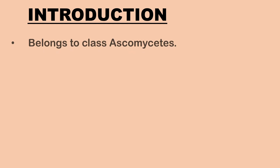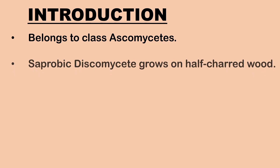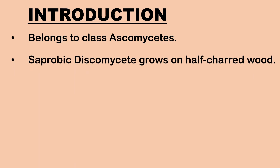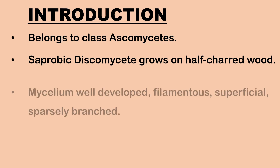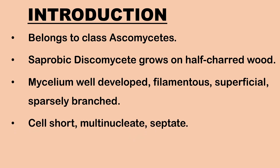Pyronema belongs to class Ascomycetes. It is a saprobic discomycete, usually found growing on decaying leaves or on half-charred wood and burnt places. The vegetative body of the fungus Pyronema is a mycelium, which is well-developed, filamentous, superficial, and sparsely branched. The cells of the hyphae are short, multinucleate, and septate.